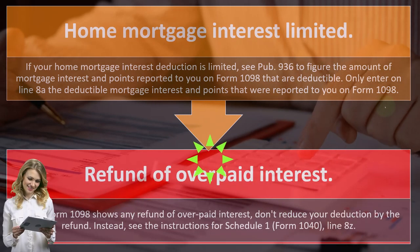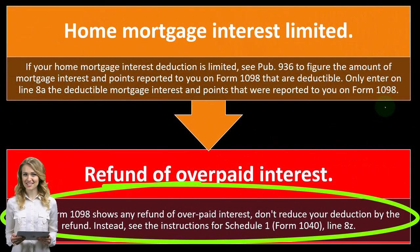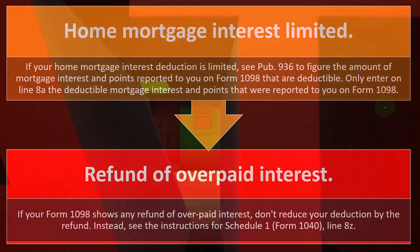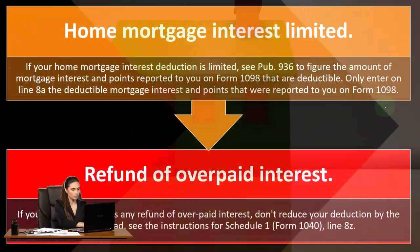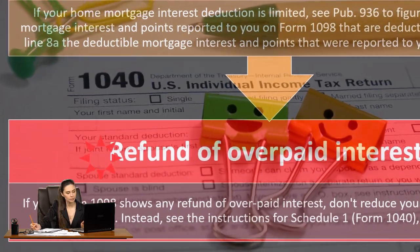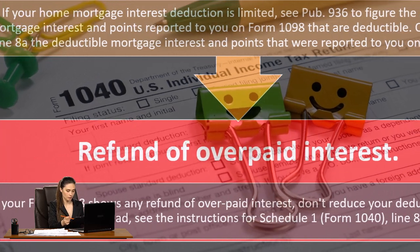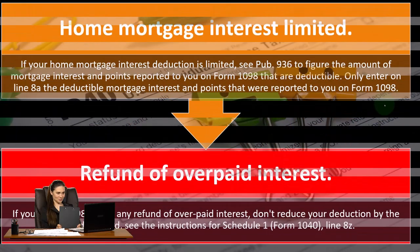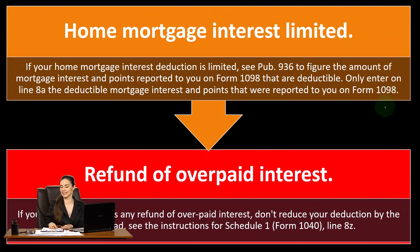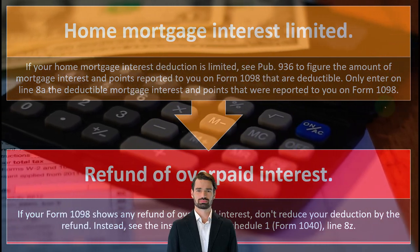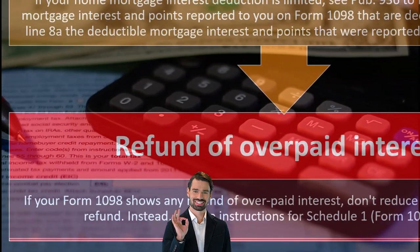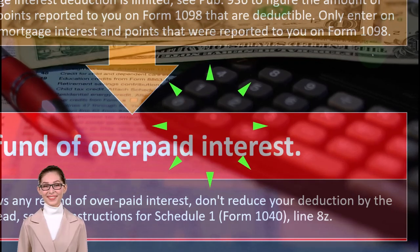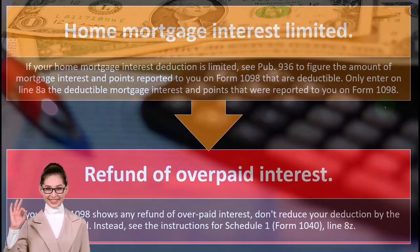Refund or overpaid interest: if your Form 1098 shows any refund or overpaid interest, don't reduce your deduction by the refund. Instead, see the instructions for Schedule 1, Form 1040, line 8Z. This is similar to the state income tax situation — if you deducted state income tax in the prior year and then got a refund, rather than amending the prior year return, you just record it as income in the current year. Same idea here: if you deducted interest in the prior year and they refunded that interest in the current year, include it as income in the current year.